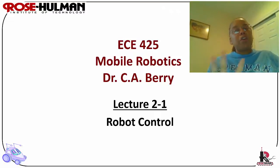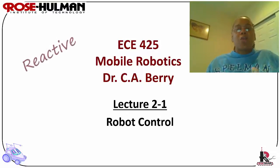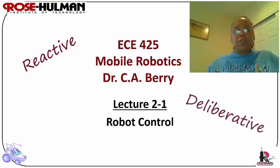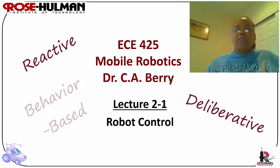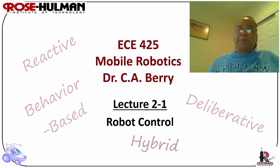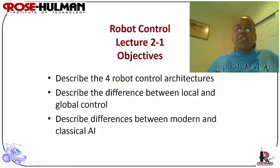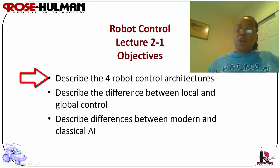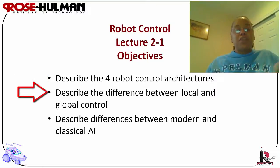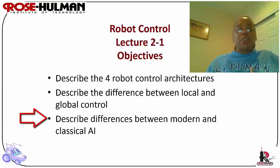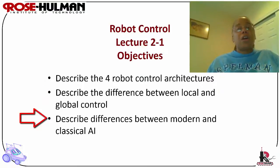Recall that the four control architectures we talk about in this course are reactive, deliberative, behavior-based, and hybrid. The objectives of today's lecture are to describe the four robot control architectures, to describe the difference between local and global control, and to describe the differences between modern and classical artificial intelligence.